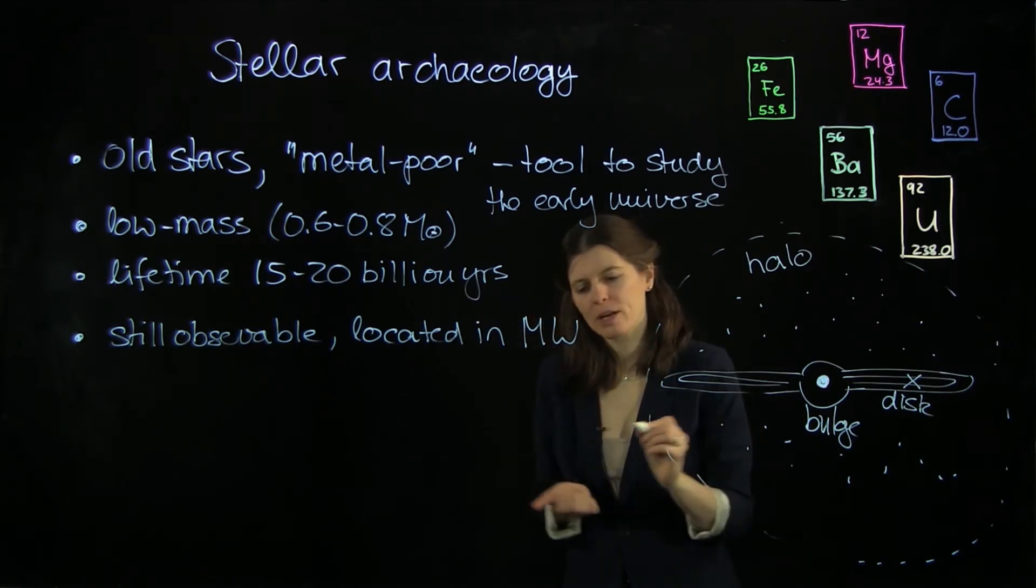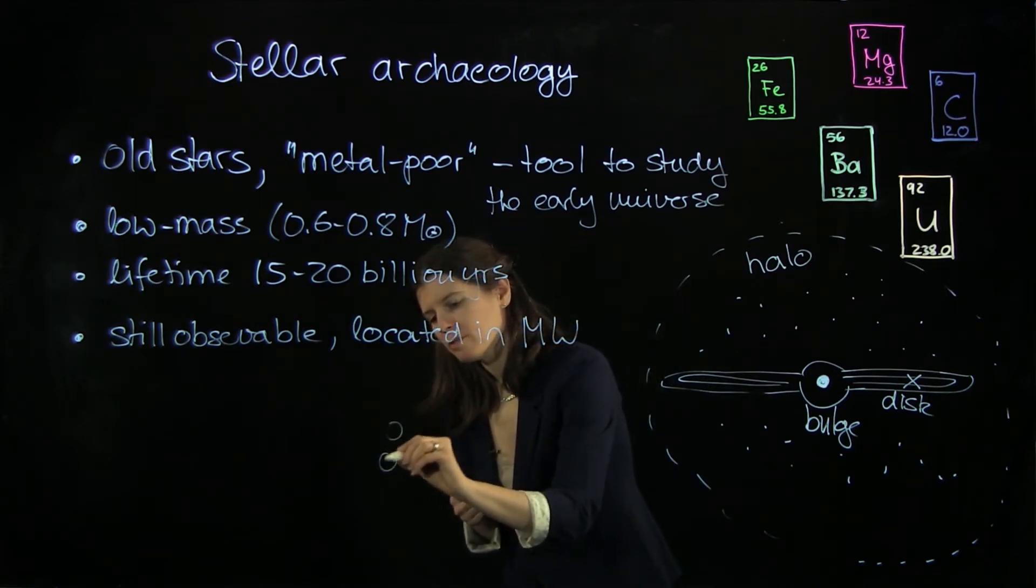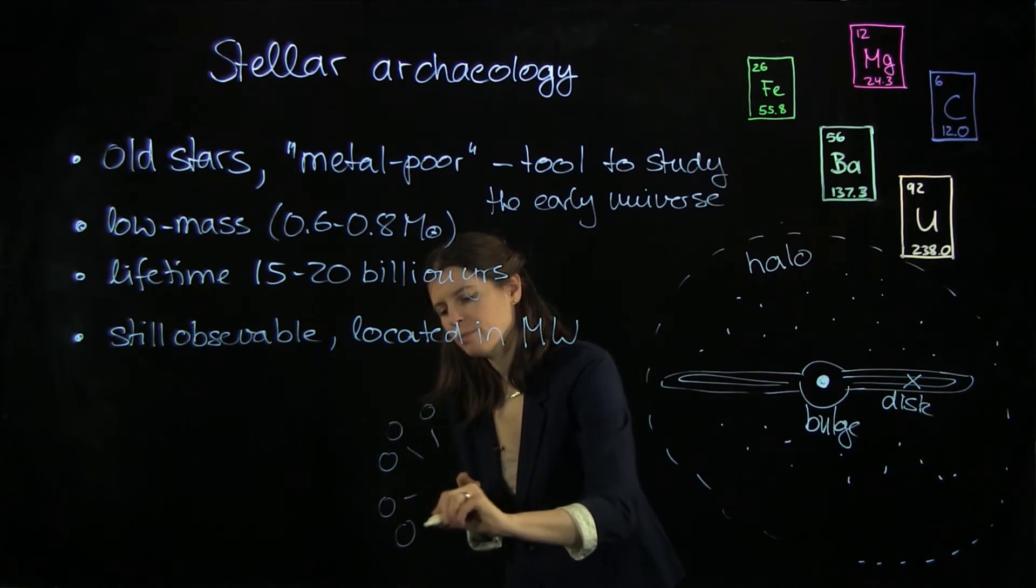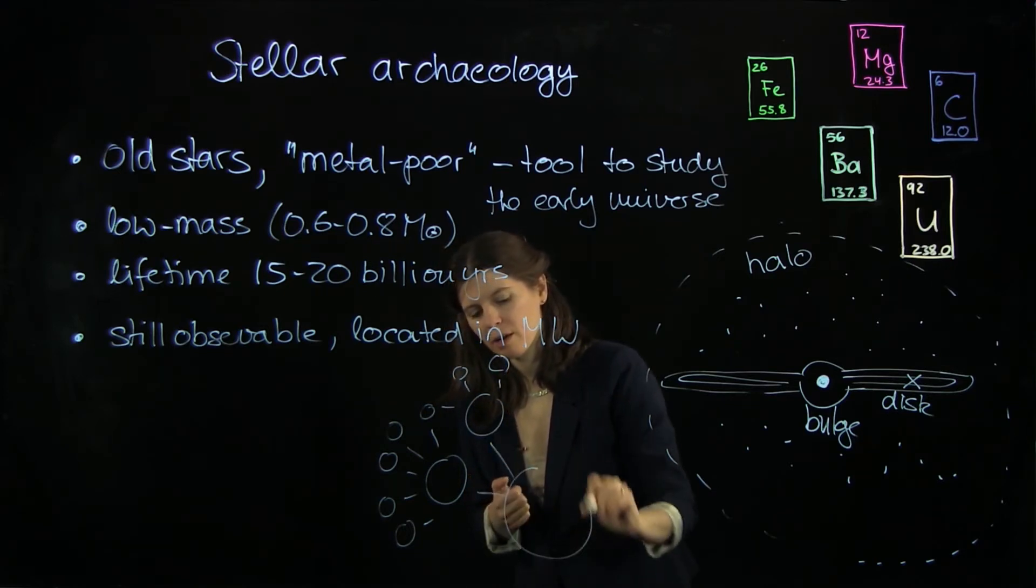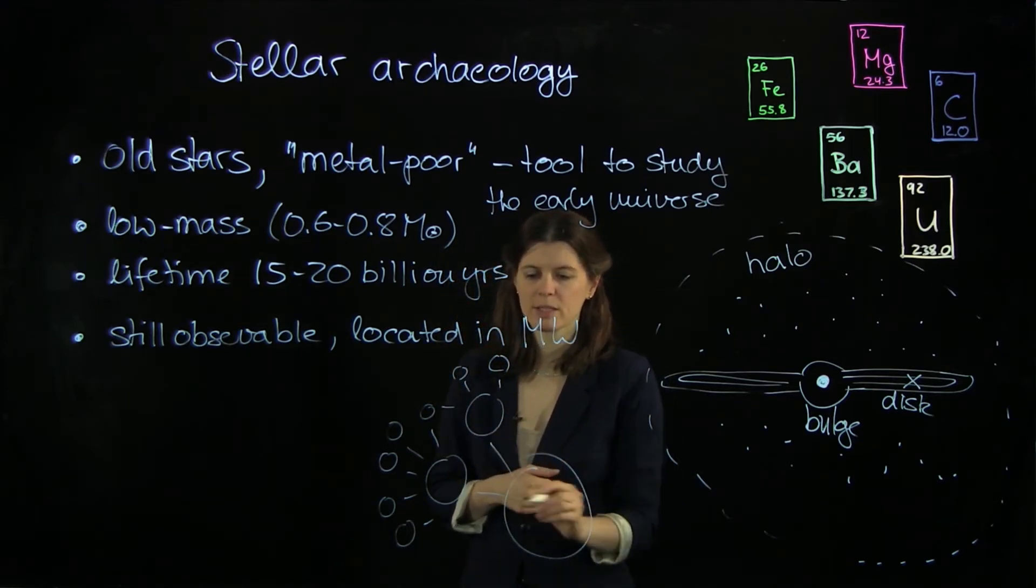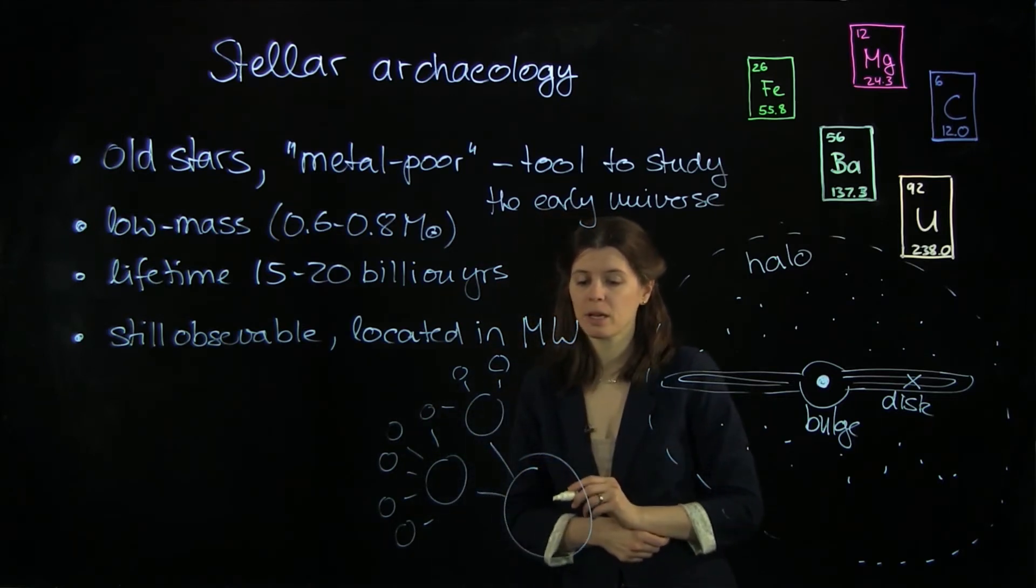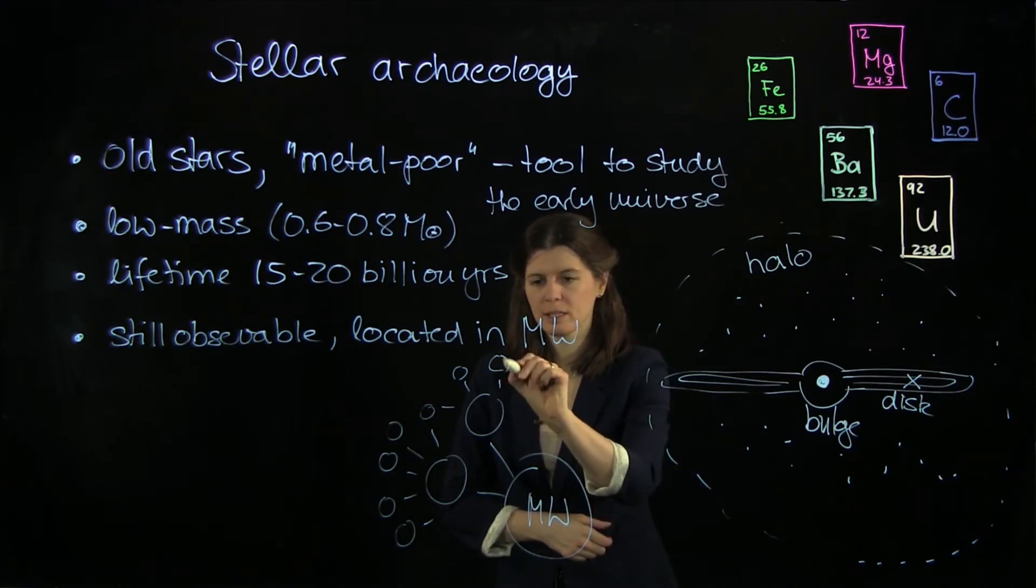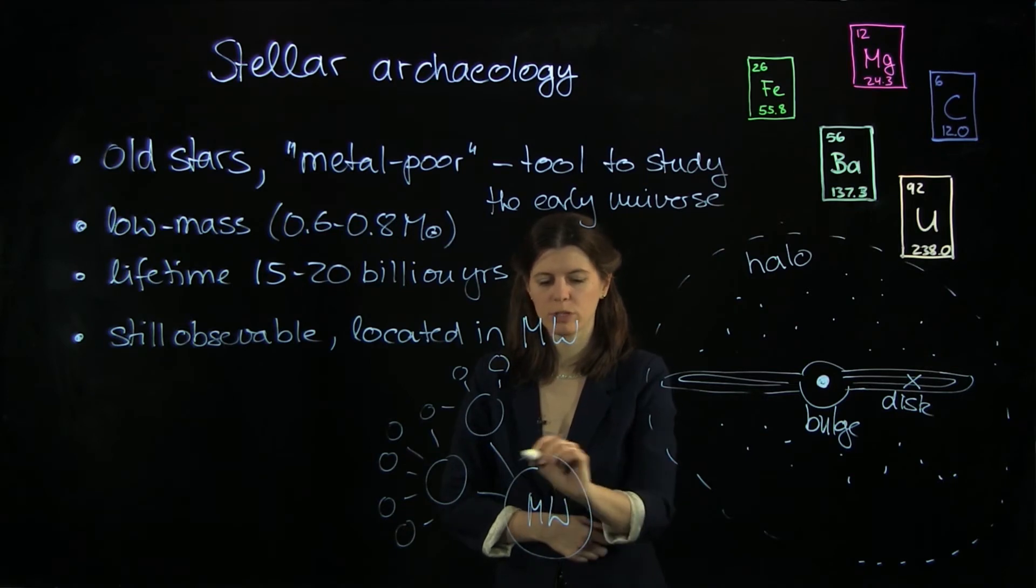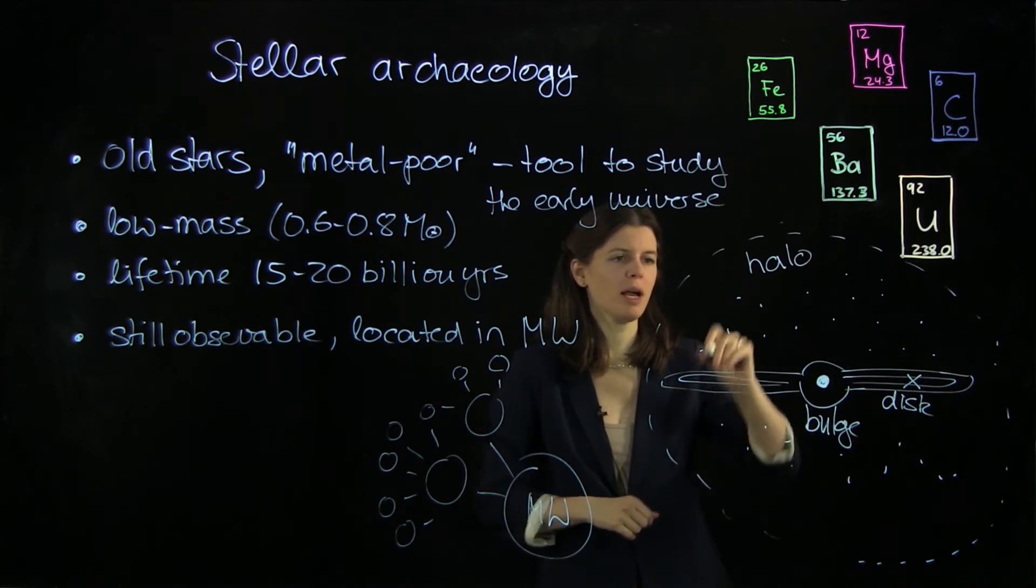And because when a galaxy forms, you have small systems that actually come together and form a bigger system. And then here you have a bigger system too. And then they come together and make an even bigger one. So that's called the hierarchical structure formation paradigm. And so this is the Milky Way, which means that these little guys here kind of end up in the outskirts, or at least a good amount of these little guys end up in the outskirts, but they are completely shredded apart.